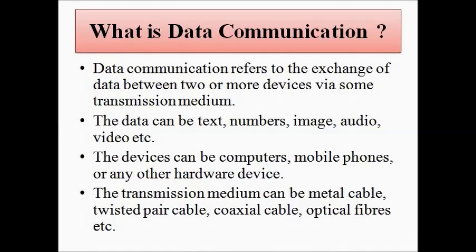The data which is exchanged or transmitted between the devices can be in the form of text, alphabets, numbers, images, audio, or video. The transmission medium can be air, metal cable or wiring, twisted pair cable, coaxial cable, or optical fibers — the means by which physical transmission takes place, either wired or wireless.